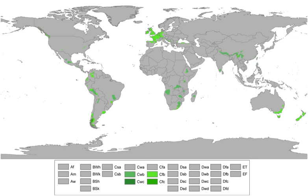Oceanic climates are defined as having a monthly mean temperature below 22 degrees Celsius in the warmest month, and above 0 degrees Celsius or minus 3 degrees Celsius in the coldest month. It typically lacks a dry season, as precipitation is more evenly dispersed throughout the year.